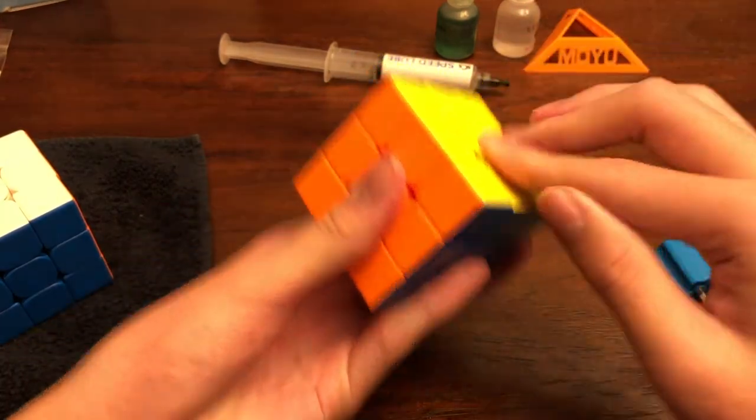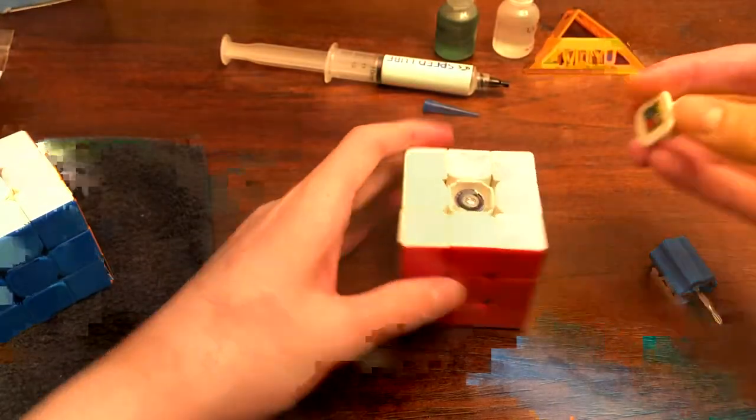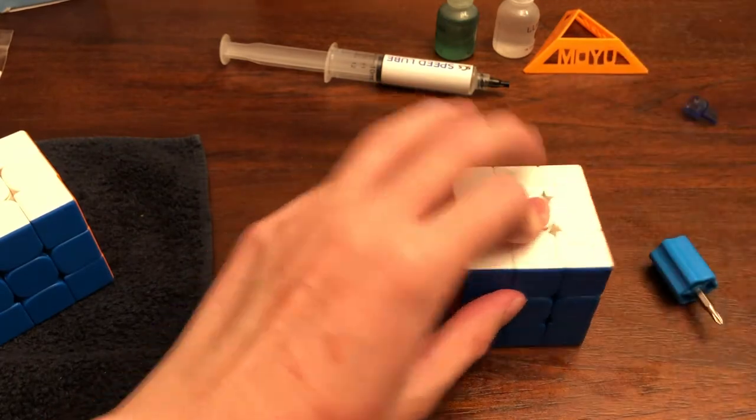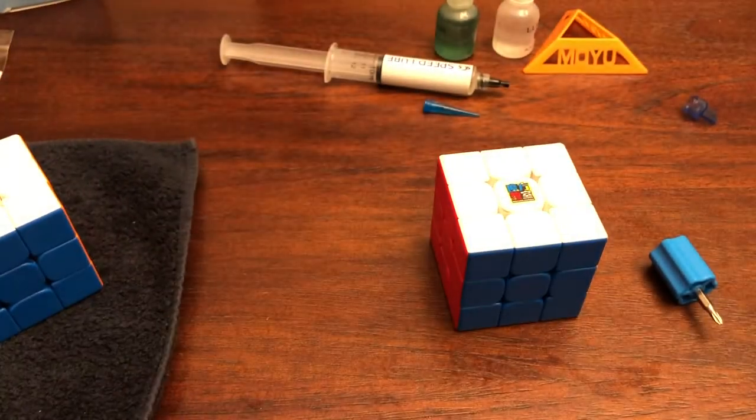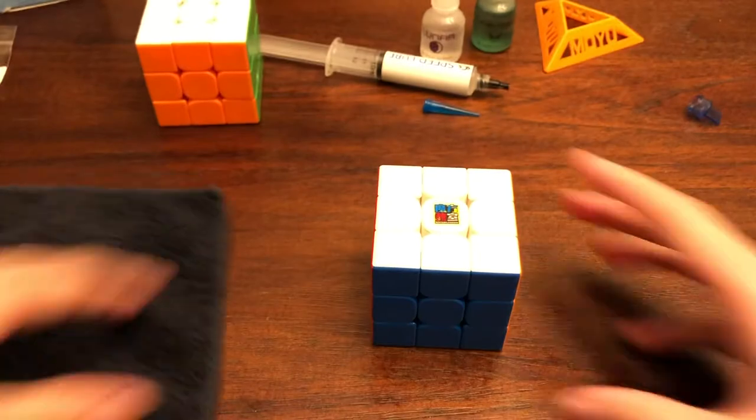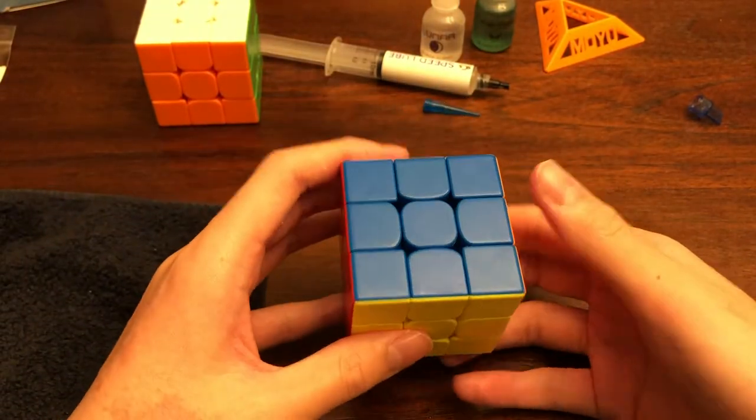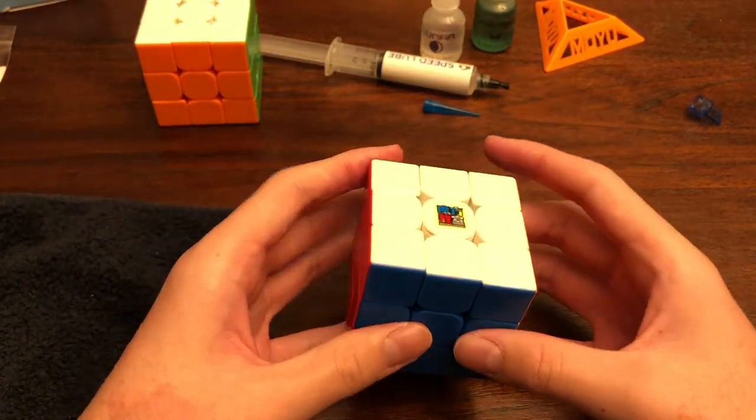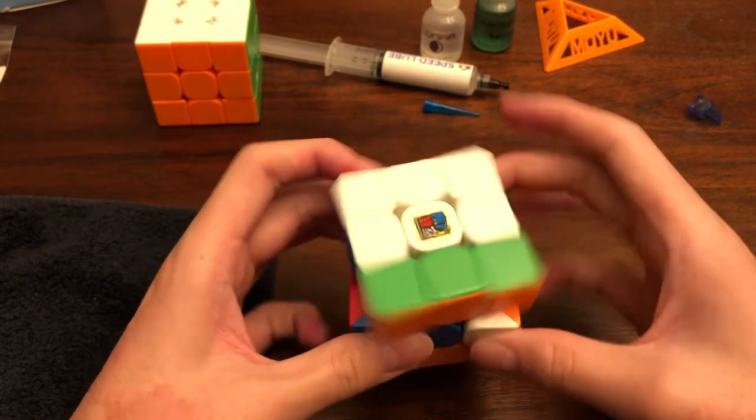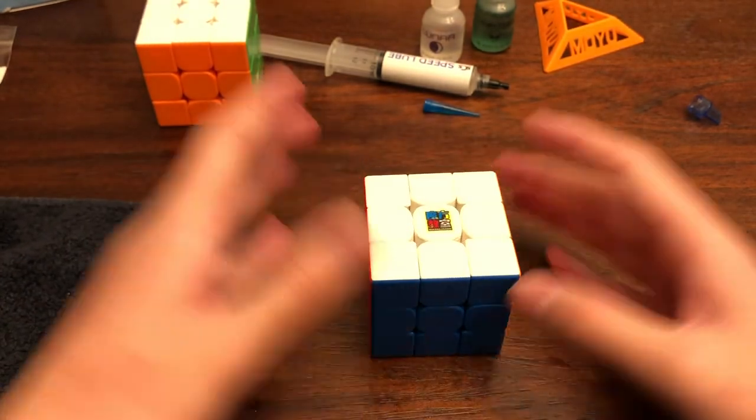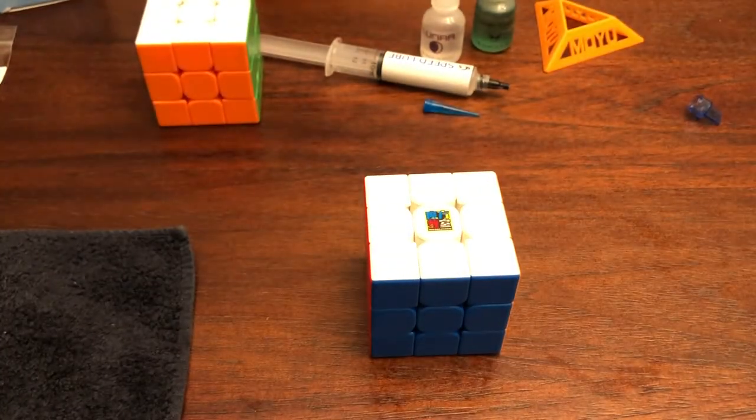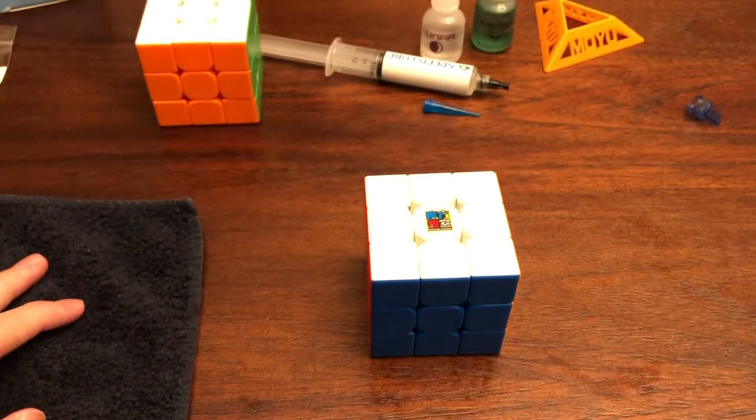So we're gonna go ahead and test out the cube and let's see if we need to tighten it at all. With the dual adjustment system, it's better to keep your cube a little bit looser with the screws because you can always tighten it with the dual adjustment system. If you want speed, pretty decent speed and a pretty good amount of control, then I would recommend this setup. So I hope you guys enjoyed and I hope this video was helpful. And yeah I guess I'll see you guys next time.